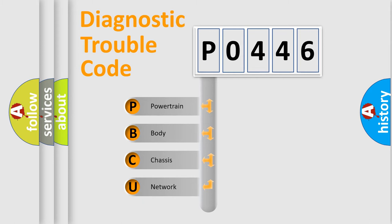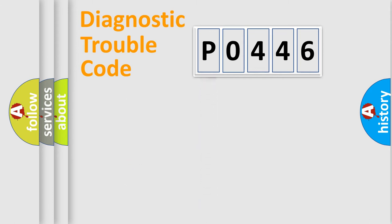We divide the electric system of automobile into four basic units: Powertrain, Body, Chassis, and Network.